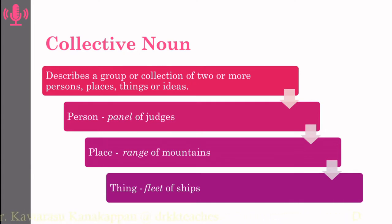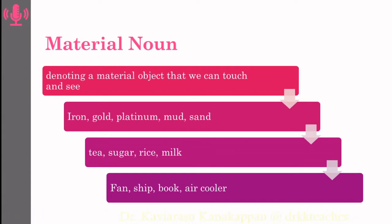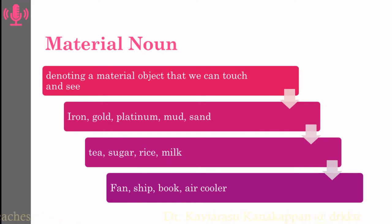Of these examples, the words panel, range, and fleet are examples of a collective noun. Material noun is a word which denotes a material or object that we can touch and see. So material noun is a noun which appeals to two of the six senses of human being — the touch sense and the sight. The examples of material nouns are iron, gold, platinum, mud, sand. These are some categories of material nouns which come under the raw material category.